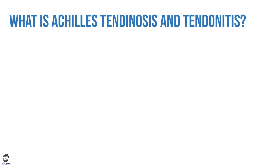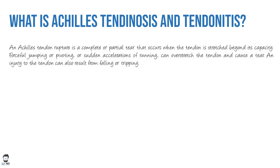Tendonitis is inflammation of the tendon, and tendinosis is degeneration of the tendon. We are talking about Achilles tendon rupture, which is a complete or partial rupture that occurs when the tendon is stretched beyond its capacity. Tendinosis and tendonitis can both lead to Achilles tendon rupture.